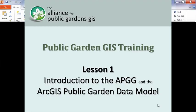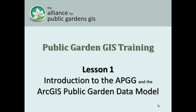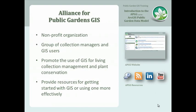This is lesson one: introduction to the Alliance for Public Gardens GIS and the ArcGIS Public Garden data model. The Alliance for Public Gardens GIS is an informal non-profit organization — essentially a group of collection managers and GIS users working together to make it easier for people to get started using GIS at gardens and zoos. One of our main missions is to promote the use of GIS for managing living collections and for plant conservation.